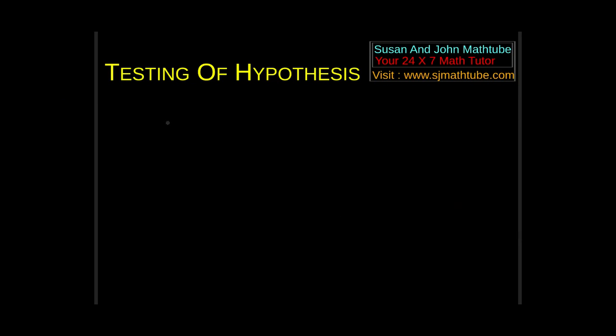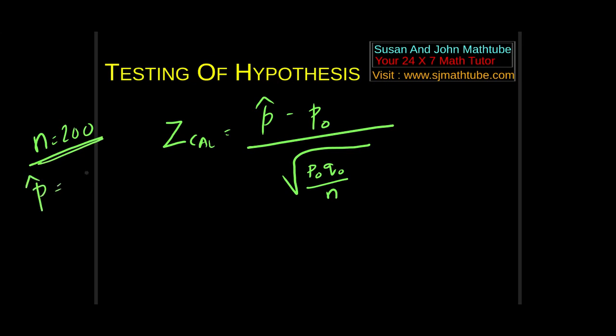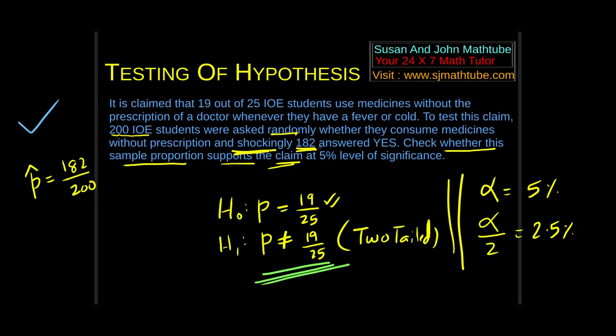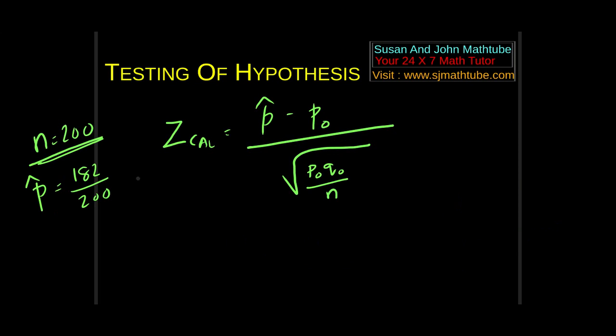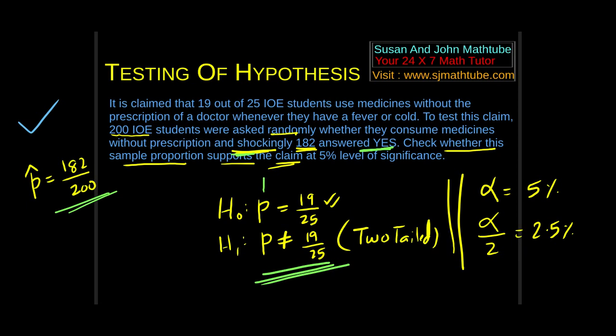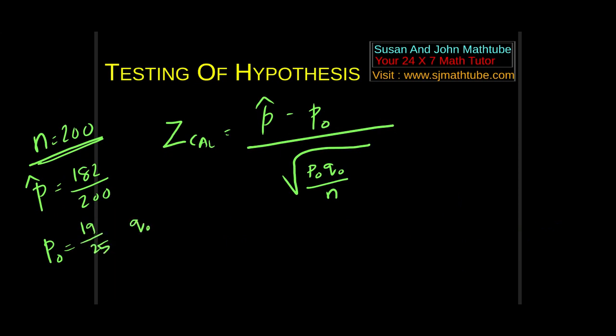Step number 3. In step number 3, I will write the formula. You can simplify that by yourself. P cap minus P naught by root under P naught Q naught by N. N equal to 200 because they have questioned 200 students. P sample will be 182 by 200. You can check it here. 182 answered yes. Shockingly 182 answered yes. P cap is 182 out of 200. P naught, what is P naught? The right side of H naught, the right hand side of H naught, that is 19 by 25. Q naught is 1 minus P naught, that will be 6 by 25. Substitute. I got the answer 4.966. You can try the rest by yourself.